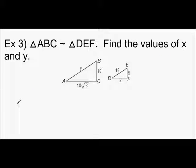Example 3. Triangle ABC is similar to triangle DEF. Find the values of X and Y. So, since these are similar, the side lengths are proportional.